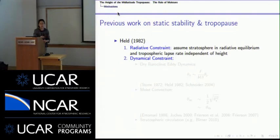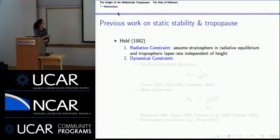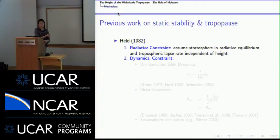Many studies have tried to understand the tropopause. One of the first was Held 1982, which suggested dividing the problem into radiative and dynamical constraints. The radiative constraint assumes the stratosphere is in radiative equilibrium and the tropospheric lapse rate is independent of height. Given a dynamical constraint, we can solve for two unknowns: the tropopause height and the static stability of the troposphere.